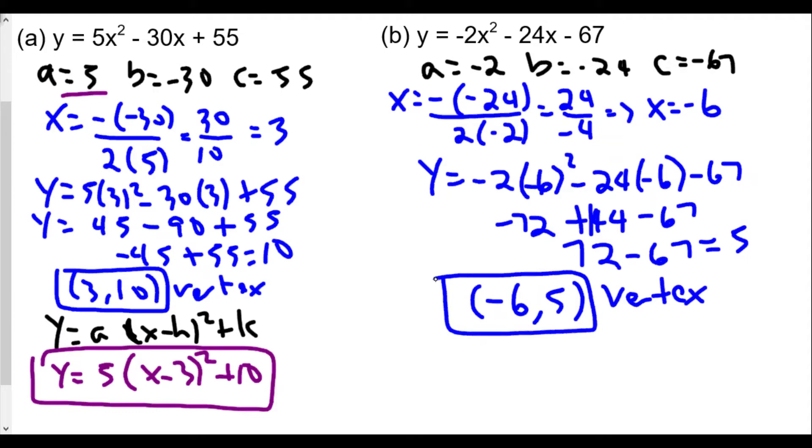We're going to use our formula here. Our a value is negative 2, so y equals negative 2 times (x minus negative 6) squared plus k, which we simplify to y equals negative 2 times (x plus 6) squared plus 5. This is the vertex form of y equals negative 2x² minus 24x minus 67.